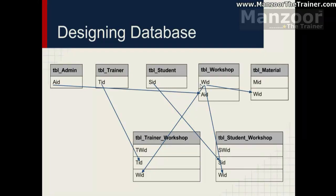To avoid this, I will club admin, trainer, and student into a single user table and add a role ID column. The role could be admin, trainer, or student. In future, if you add sponsors or guest lecturers, you simply add a new role — so you can support any number of user types without changing the table structure.